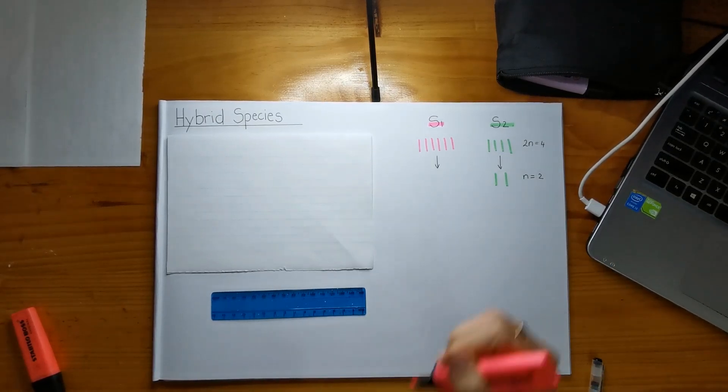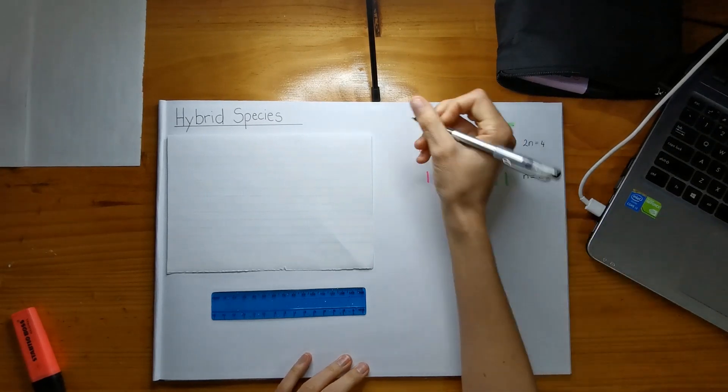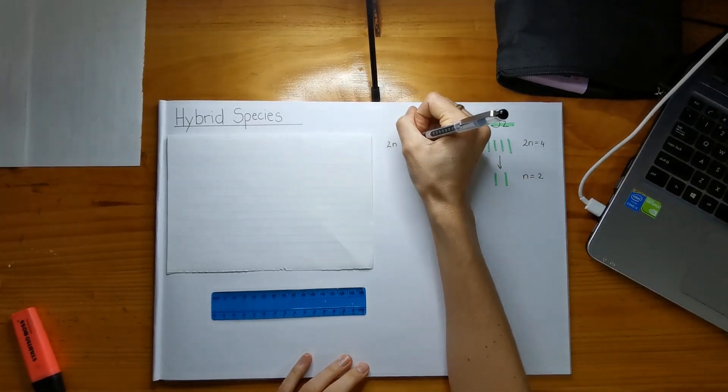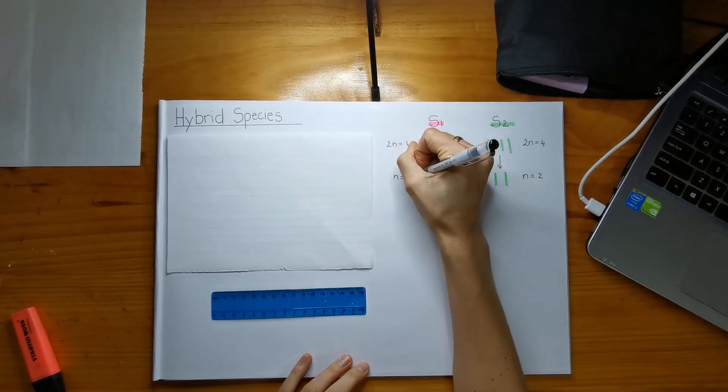And in species 1, this one's going to have 3 chromosomes. So where it was 2n equals 6, it has now become n equals 3.